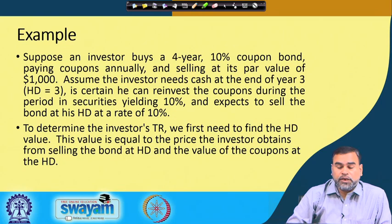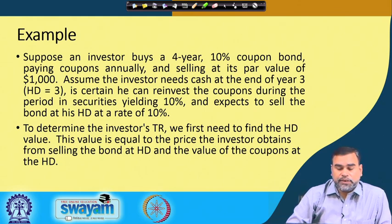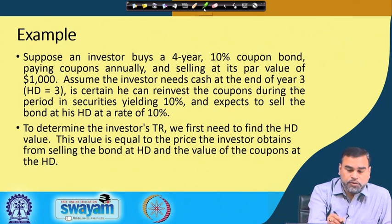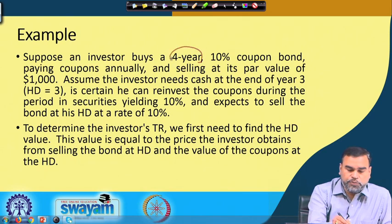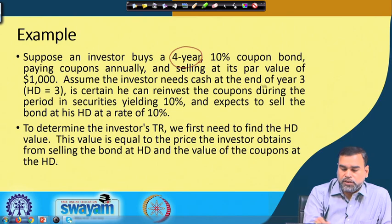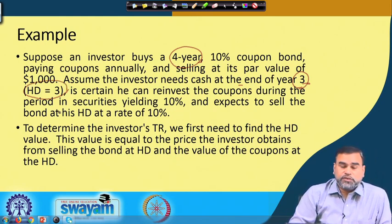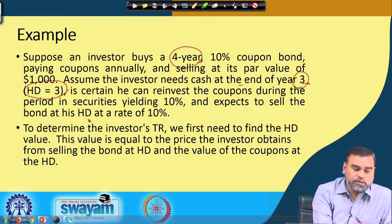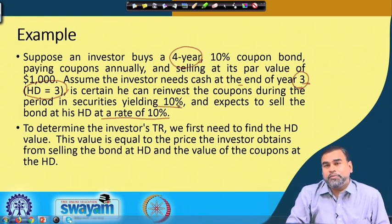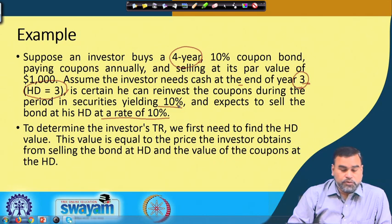Suppose one investor buys a 4-year 10 percent coupon bond paying the coupon annually and selling at its par value of 1000. Assume the investor needs cash at the end of 3 years. The bond's maturity period is 4 years but the investor needs cash at the end of year 3, so the horizon period is 3 years. He can reinvest the coupon received up to that 3-year period and expects to sell the bond at the horizon at a yield of 10 percent, which remains constant over that period.